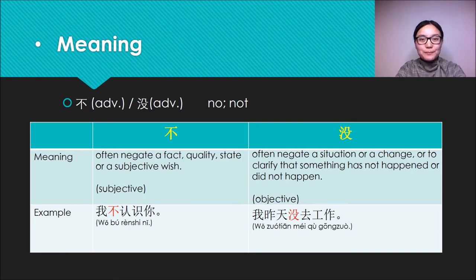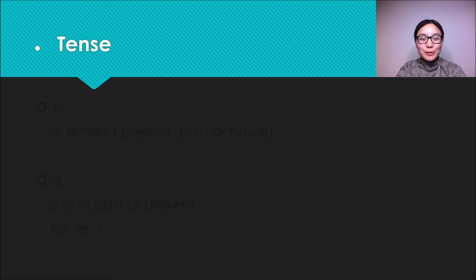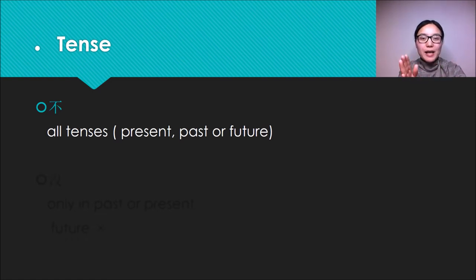Let's move to the second part: tense. In this part, firstly we should know that Bu can be used in all tenses—present, past, or future tense. However, Mei can only be used in past or present tense, can't be used in future tense.